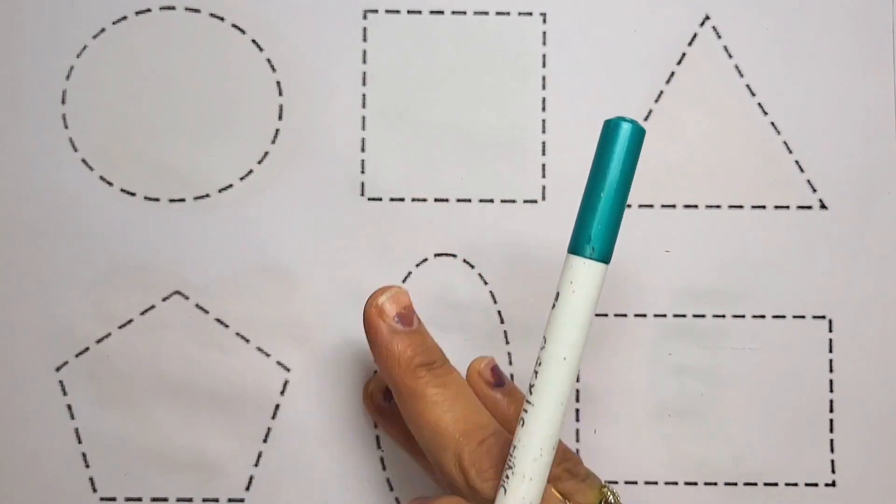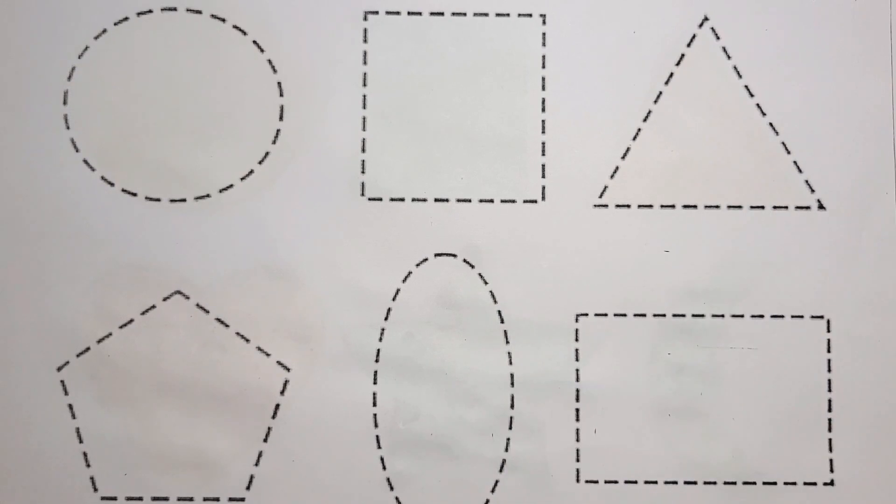Circle shape. Square shape. Triangle shape. Pentagon shape. Oval shape. Rectangle shape.